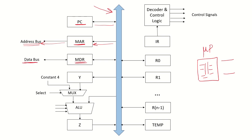The MDR has two inputs and two outputs. One input is from the external data bus and one input is from the internal bus. Similarly, the outputs are two: it can send to the external data bus and it can also send back to the internal bus. We have an ALU and general purpose registers — from R0 to Rn-1 — which are also connected to the internal bus.